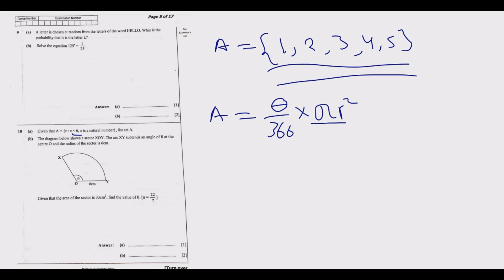What have we been given? We've been given the area, so the area is 33 centimeters squared. We're looking for the angle theta over 360, then we multiply by pi. We've been told to use 22 over 7. Then the radius is 6 centimeters, so 6 squared. So what we get is: 33 is equal to theta over 360 multiplied by 22 over 7 then multiply by 6 times 6 which is 36 over 1.